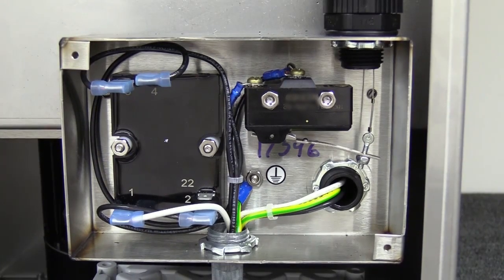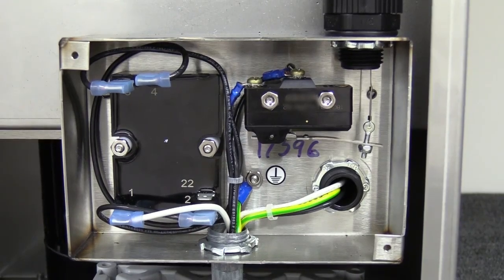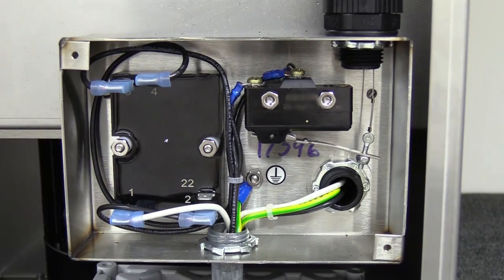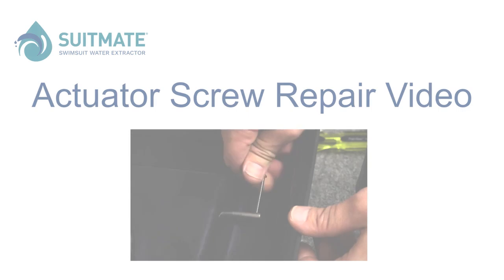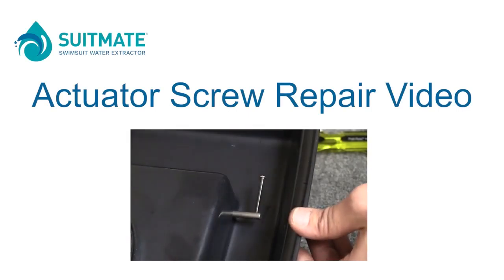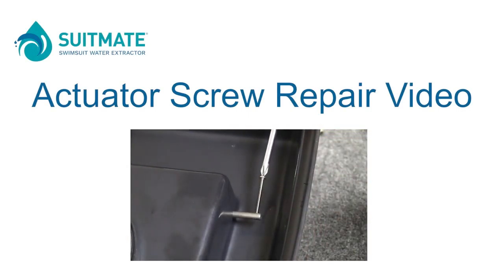If there is no movement, the actuator screw in the top may be broken and will need to be replaced. In this case, please refer to the actuator screw repair video or the lid assembly section of the full maintenance manual.